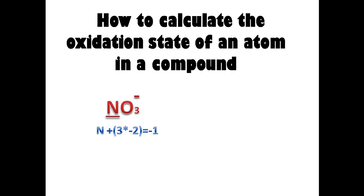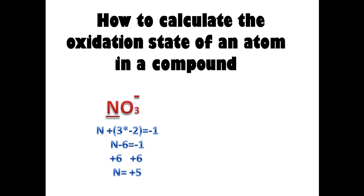I have nitrogen, which is unknown, and I have oxygen, which has an oxidation state of minus two. We have three oxygen atoms and the overall charge is equal to minus one. We do some math and then we find nitrogen to be positive five. Let's take carbonates — carbonate has a carbon and three oxygen atoms and the overall charge is negative two.